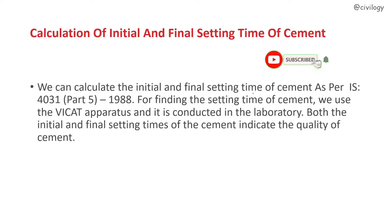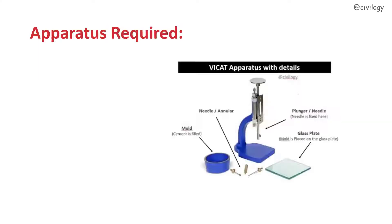We can calculate the initial and final setting time of cement as per IS 4031 Part 5, 1988. For finding the setting time of cement, we use the Vicat apparatus and it is conducted in the laboratory. Both the initial and final setting times indicate the quality of cement. The main equipment required for the Vicat apparatus includes a needle, mold, plunger or needle, and glass plate.